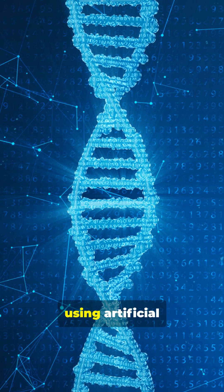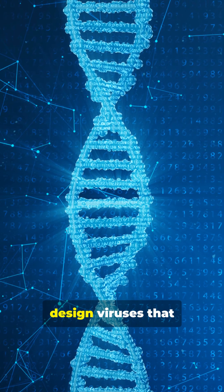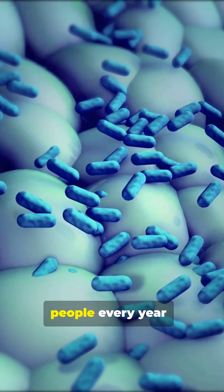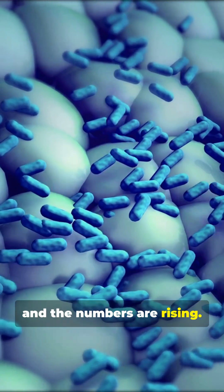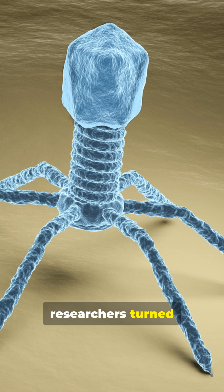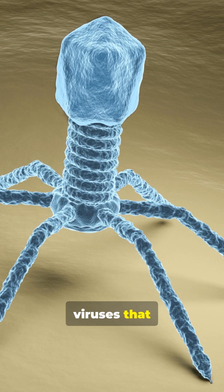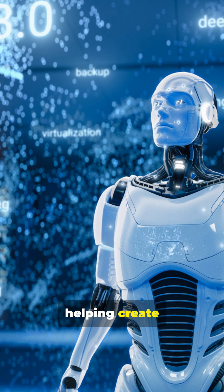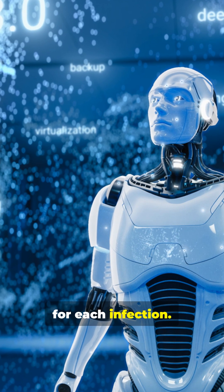Scientists are now using artificial intelligence to design viruses that eat deadly bacteria. Antibiotic resistance kills more than a million people every year, and the numbers are rising. To fight back, researchers turn to bacteriophages, viruses that naturally infect bacteria. Now, artificial intelligence is helping create customized phages for each infection.